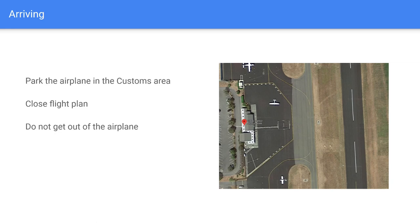When arriving in Canada, sometimes customs officials come out to the airplane, or sometimes you can just call the CANPASS phone number, tell them you've arrived, and they may do the whole process over the phone. It depends on the situation — we were a group of five airplanes, so they had officials come out to the airport to meet us since we'd all arrive close together.